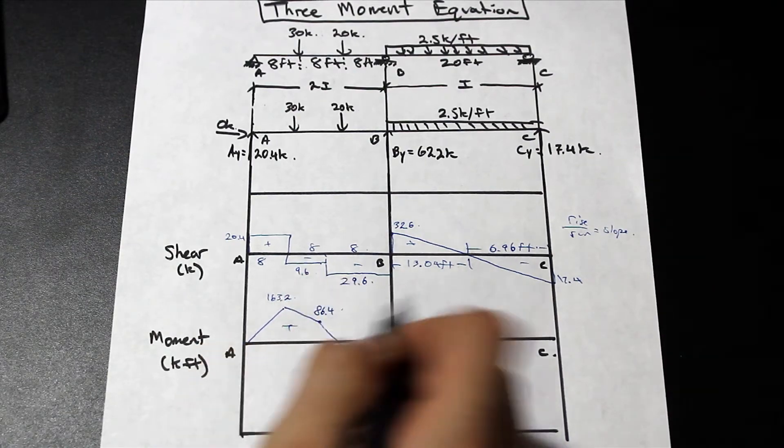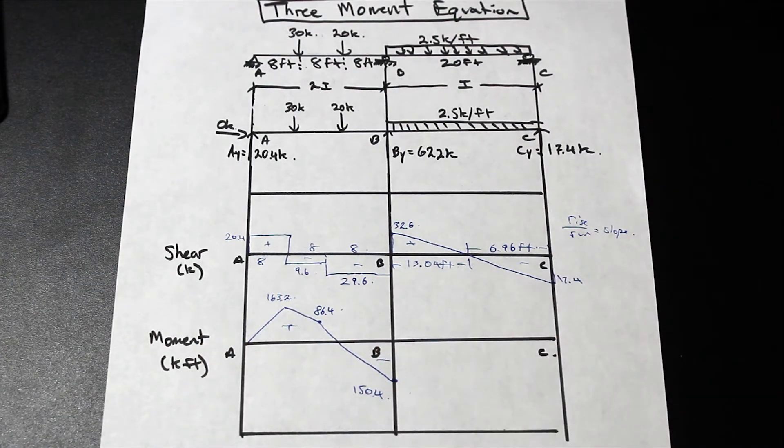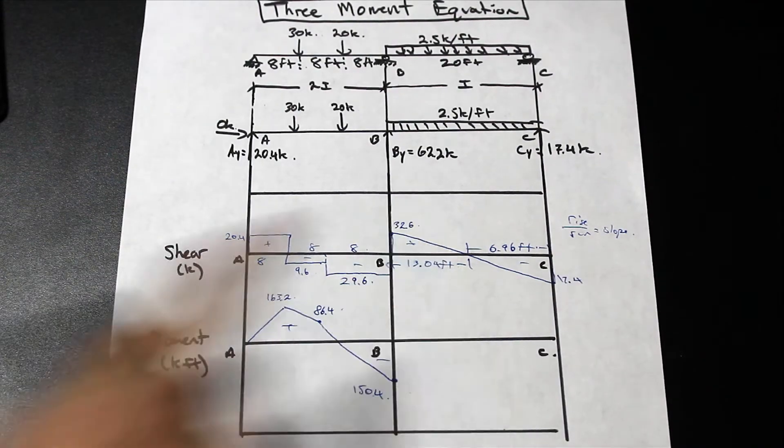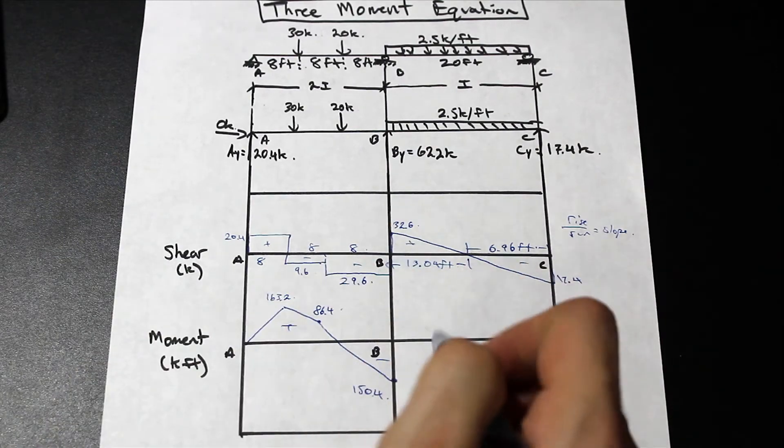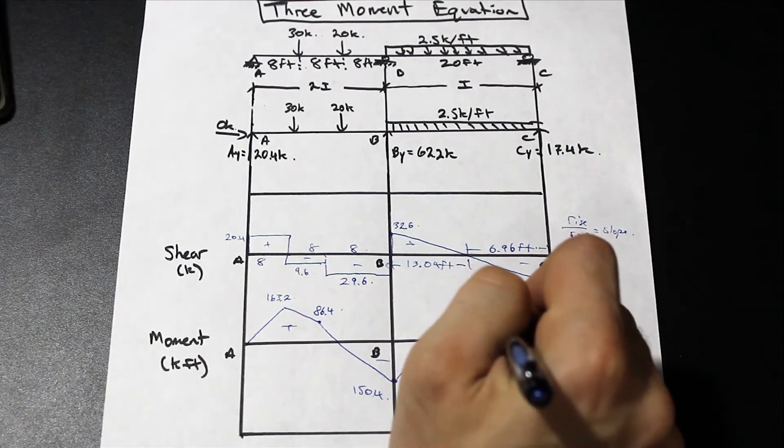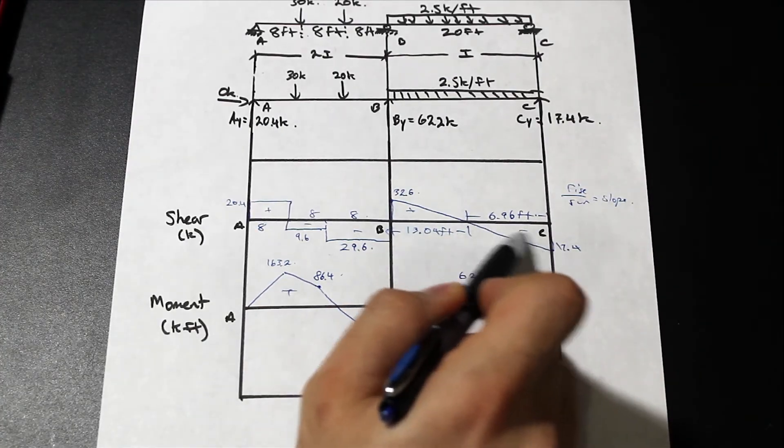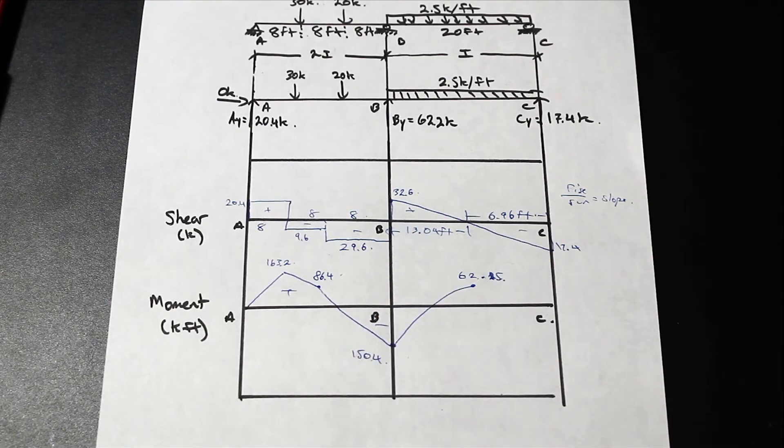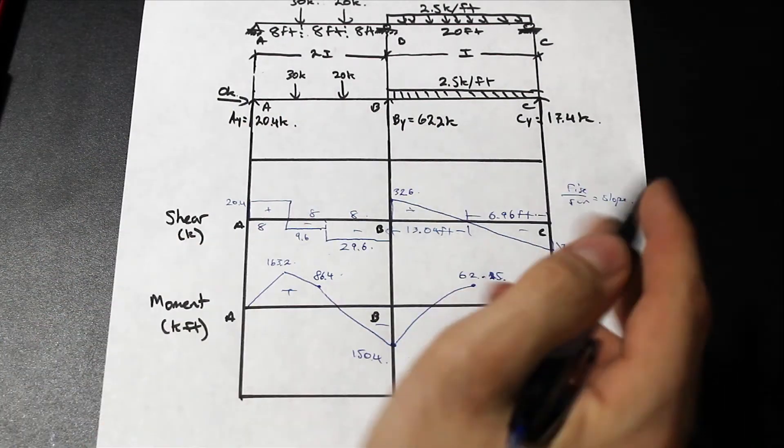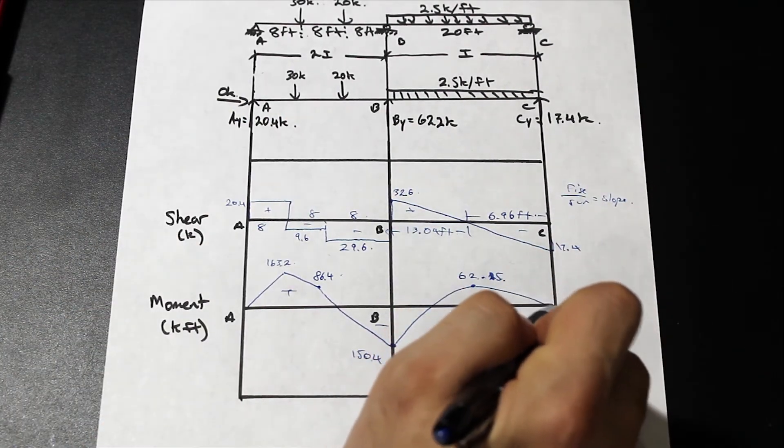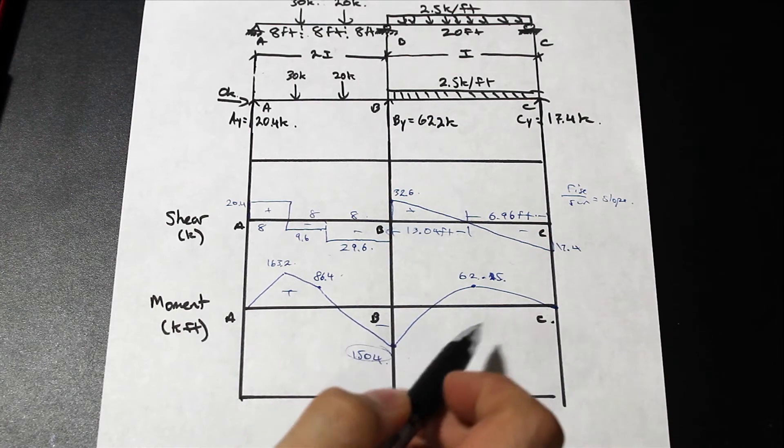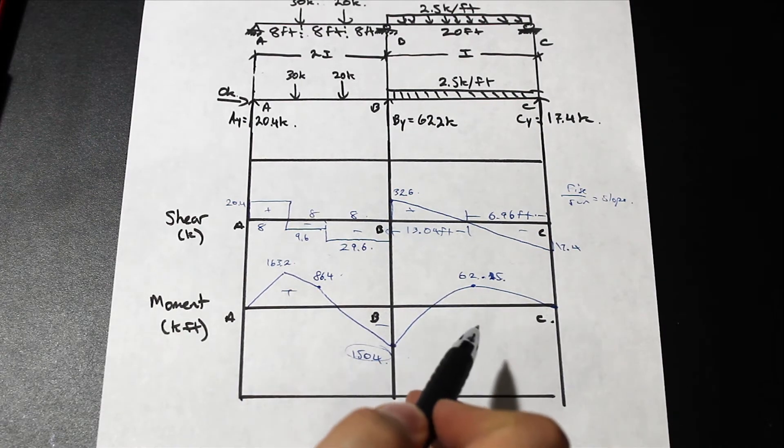That's negative, this is positive. So then from negative 150.4, let's add the area of this triangle here. We're going to go up to, we're going to get 62.15. And if we go ahead and subtract the area of this triangle here, we're going to get roughly zero.